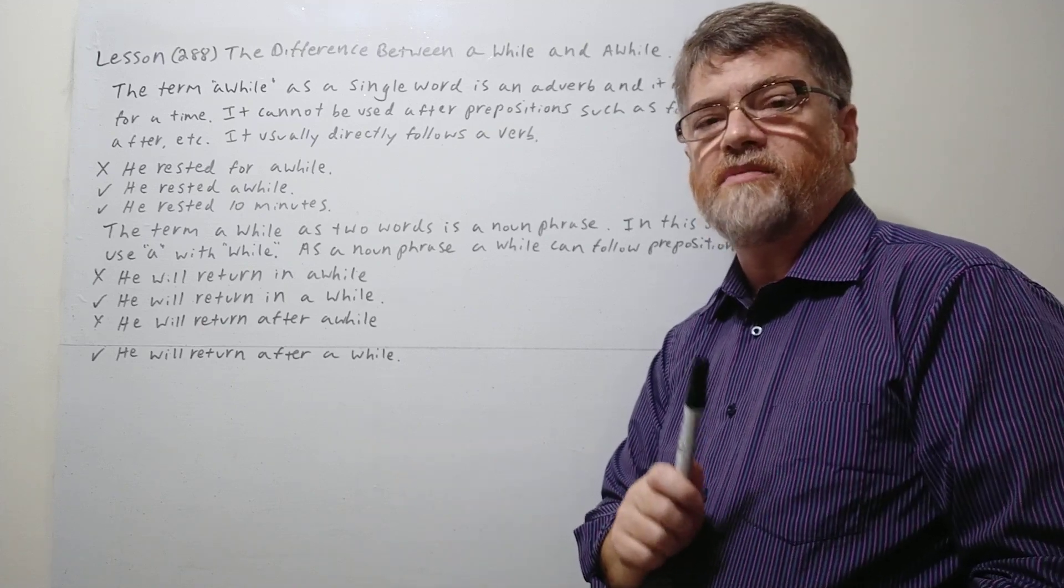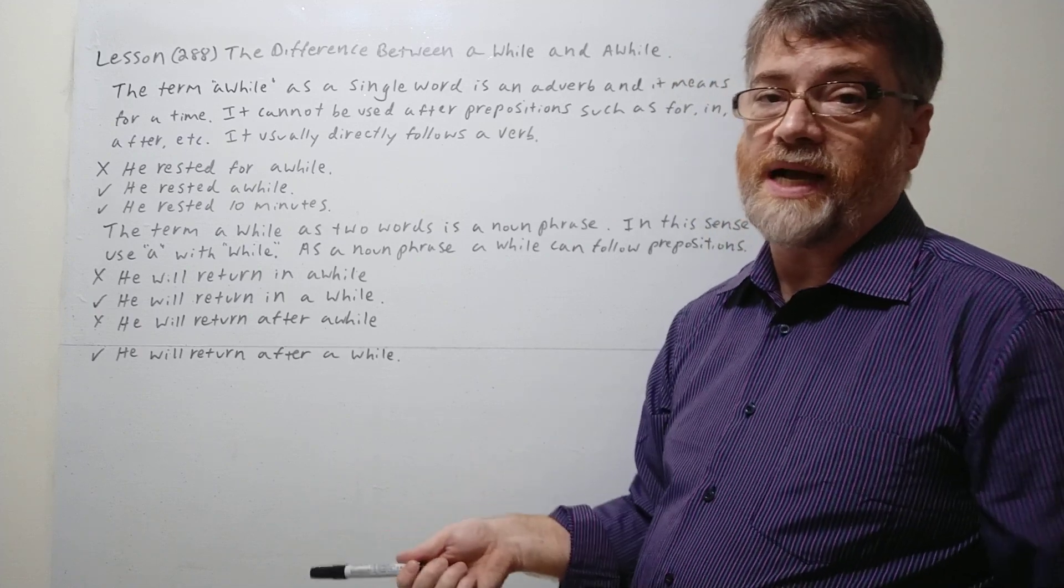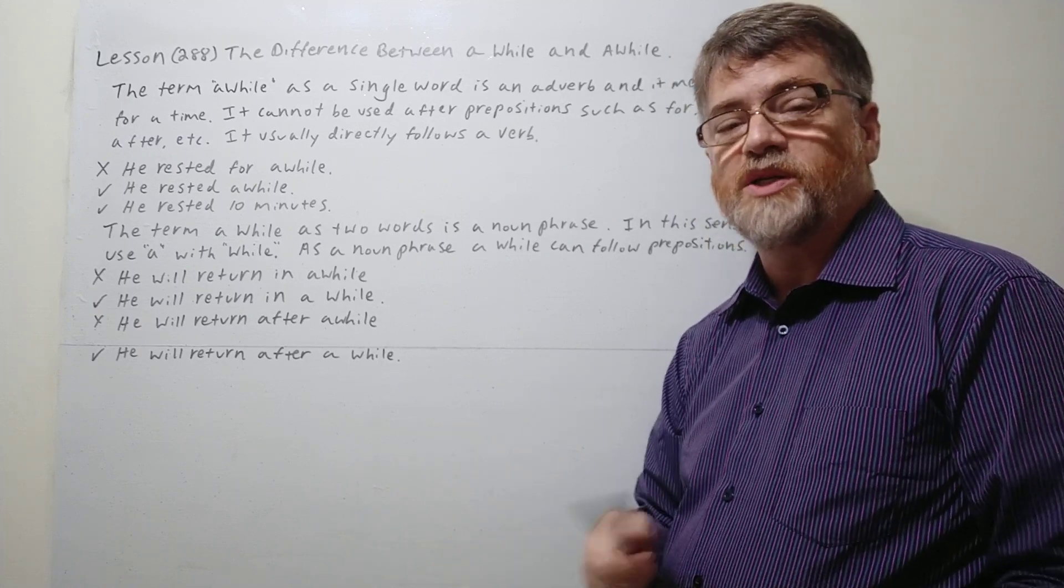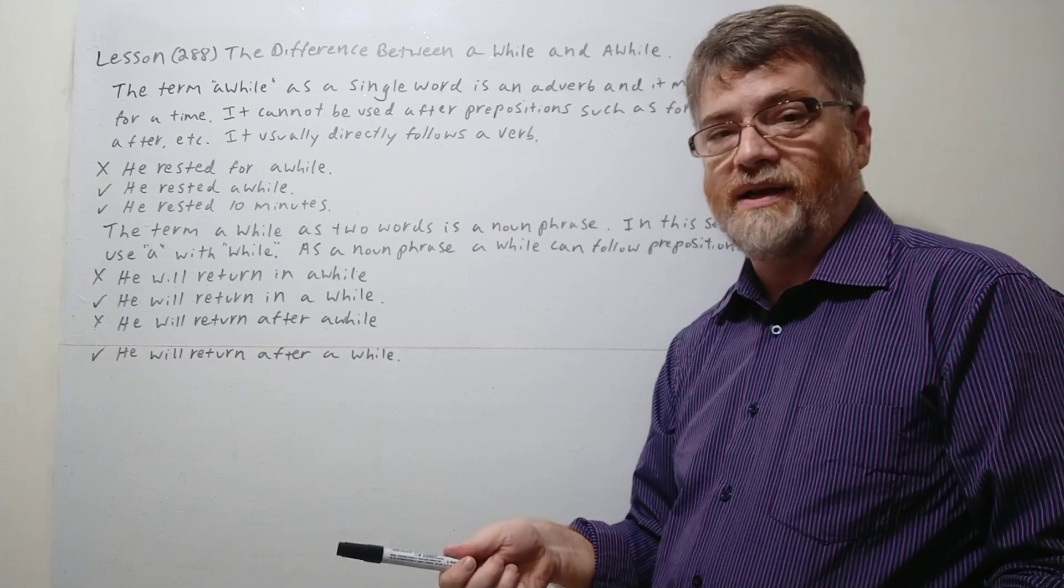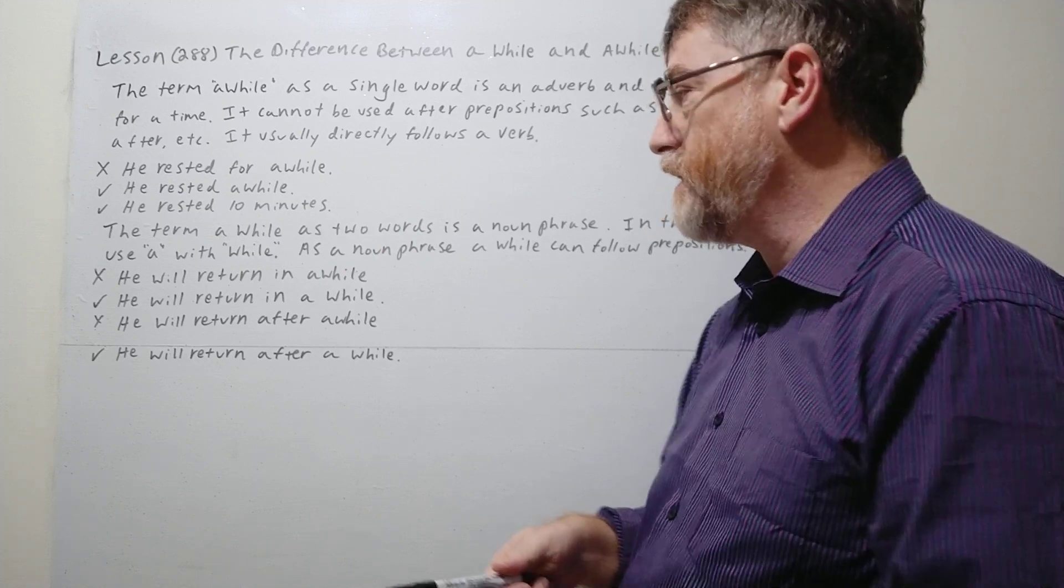This is a mistake that we're probably going to notice more in writing, because when you speak it, it sounds exactly the same. A while as one word and a while as two words is spoken so fast that you can't tell the difference in speech. You're mostly going to see this in writing.